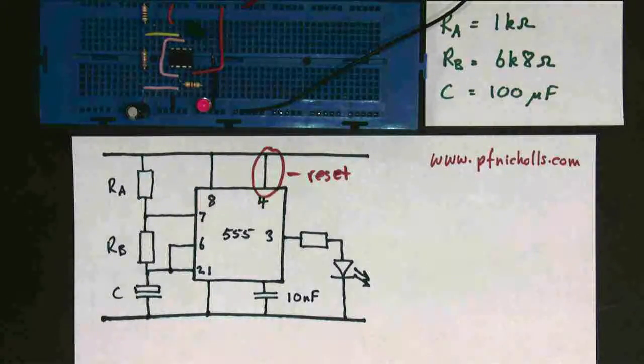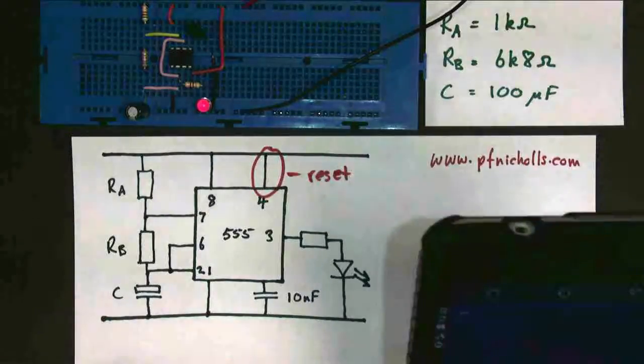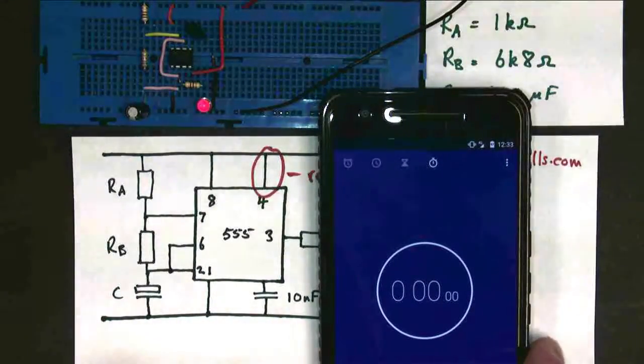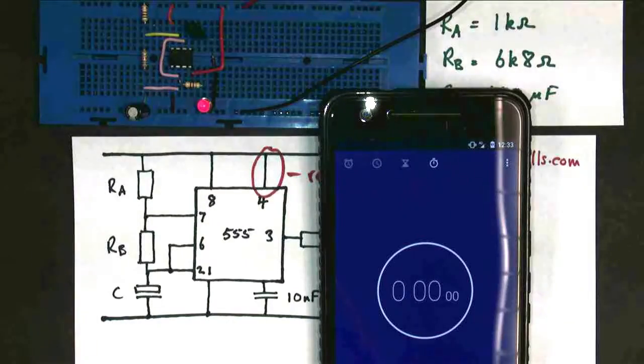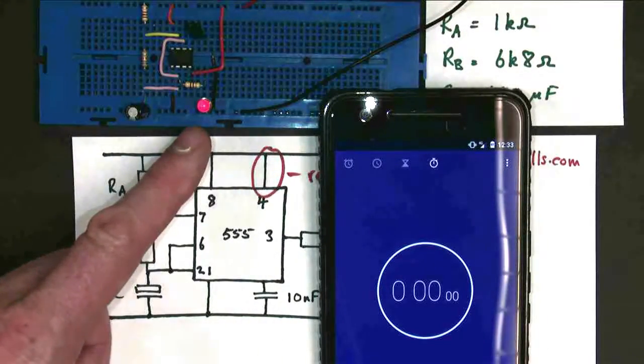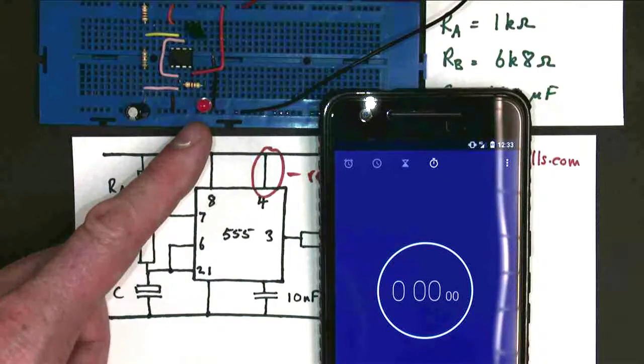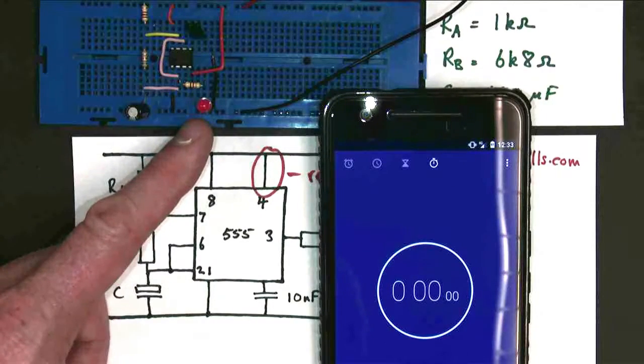Now let's try and measure the time period of our A-stable. So we need a stopwatch. So here is my stopwatch. And the time period is the time that it comes on and off for. So I'm going to count my way in. 3, 2, 1, start.